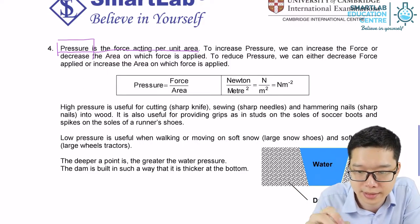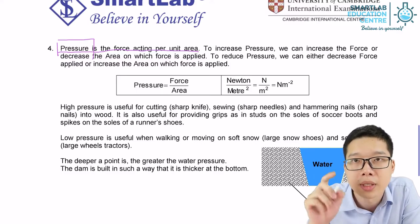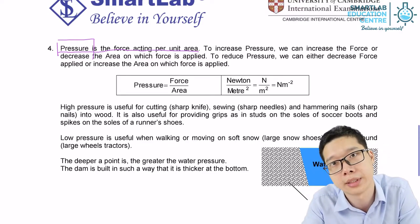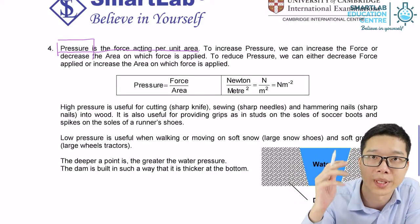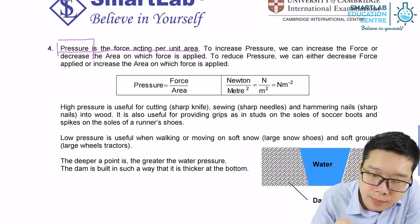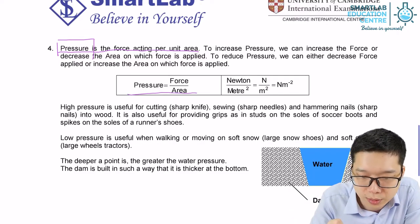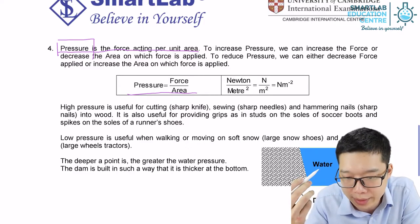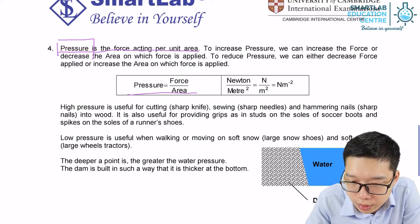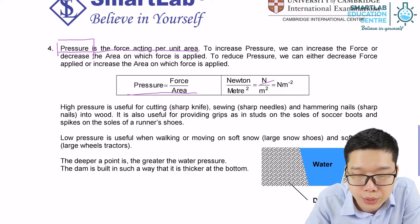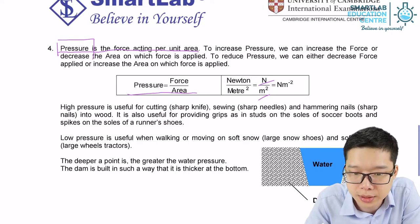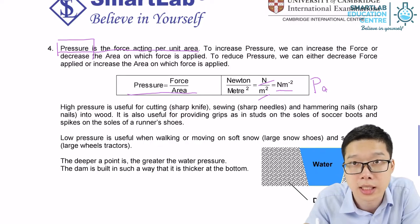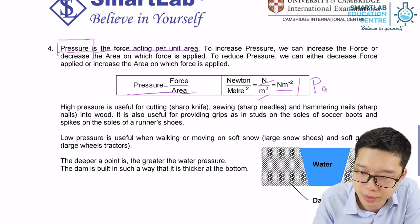With smaller contact area, the pressure will be greater. With larger contact area, the pressure will be smaller for the same amount of force applied. The equation is: pressure equals force over area. The SI unit — since the unit for force is Newton and the unit for area is meter squared — the unit for pressure is Newton per meter squared, or sometimes we call it Pascal.